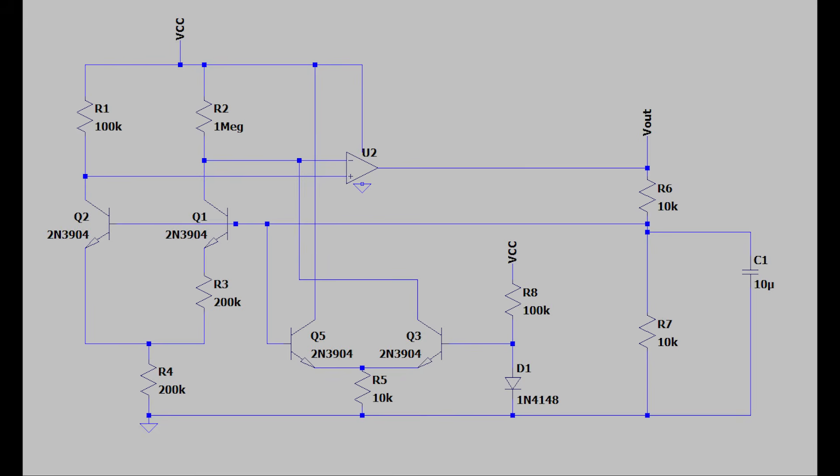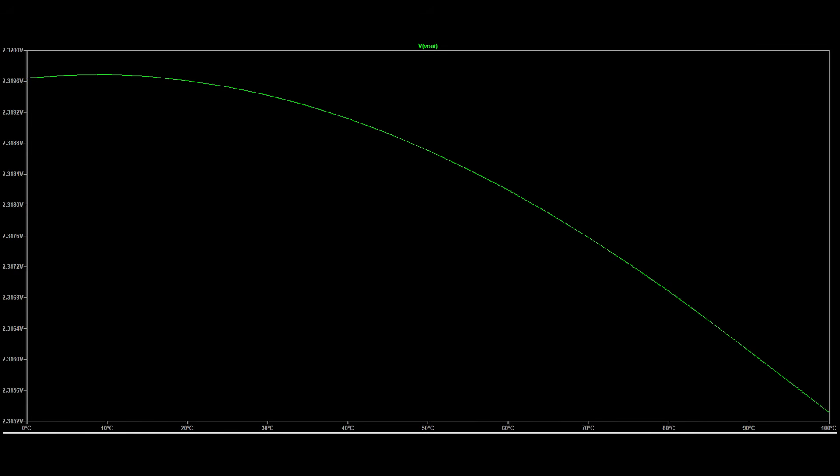Of course, it isn't actually zero, but it's pretty close. The simulation estimates that we should get about 47 microvolts per degree Celsius of drift.